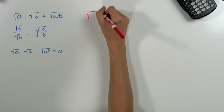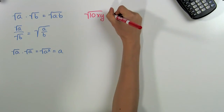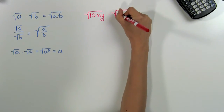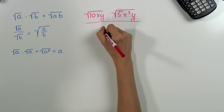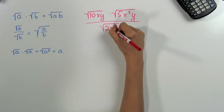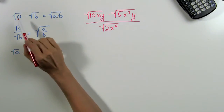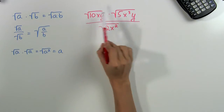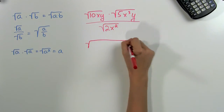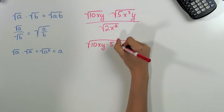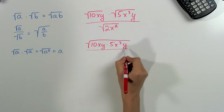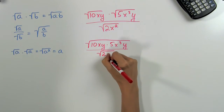So now let's do an example and see how we can use these properties. Let's simplify the expression: the square root of 10xy times the square root of 5x cubed y, all divided by the square root of 2x squared. Using our first property that we learned here, we can combine these two top terms and get the square root of 10xy times 5x cubed y, divided by the square root of 2x squared.